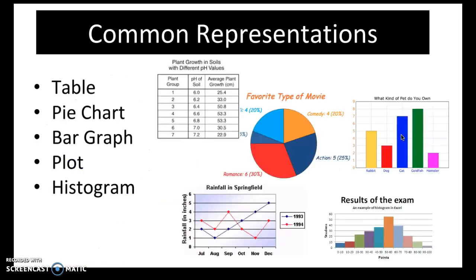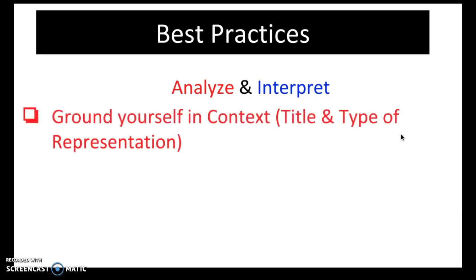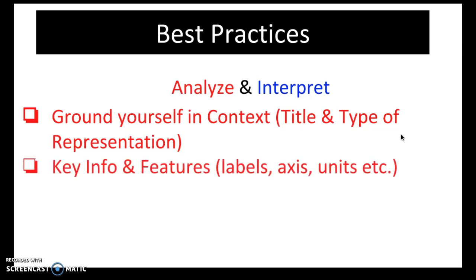To quickly recap, we looked at the common representations of data: table, pie chart, bar graph, plots, and histograms. And then we went over best practices for analyzing and interpreting data. Starting with analyzing, which is making sense of the data, you want to ground yourself in the context by reading the title and identifying the type of representation. Then you will look for key information and features.